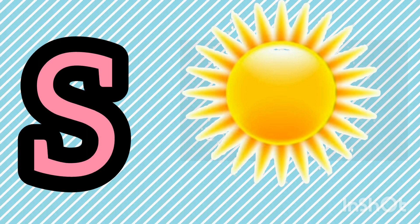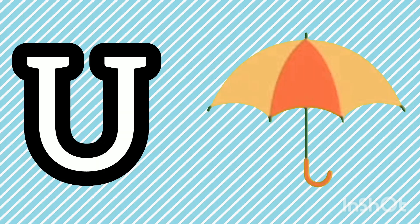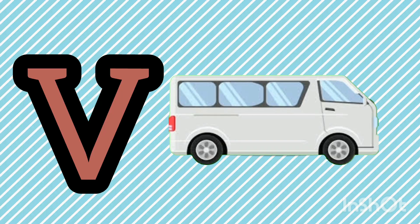S. S for sun. T. T for tiger. U. U for umbrella. V. V for violin.